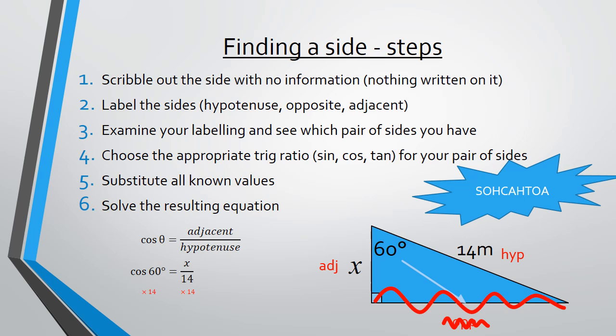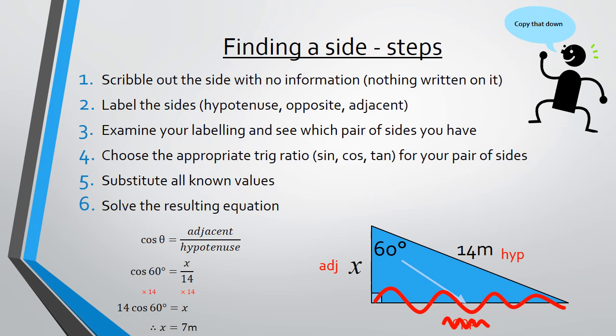We multiply both sides by 14. Which gives us 14 cos 60 equals x. So the 14 is multiplied to the front of the cos, not to the 60. And we type 14 cos 60 in our calculator. And we get x being 7 metres. Take a moment to copy all that down.